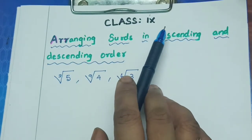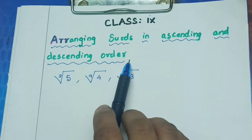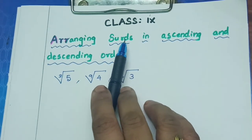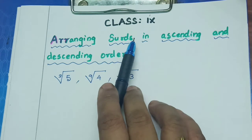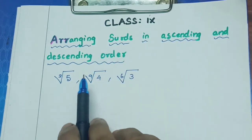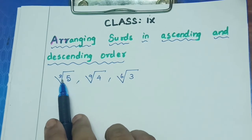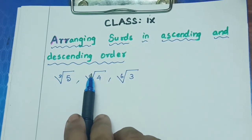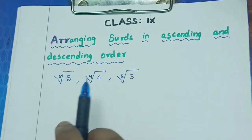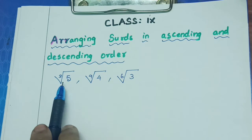Class 9 concept: how to arrange surds in ascending and descending order. Surds are a rational root of a positive rational number. The surds given are: cube root of 5, 9th root of 4, and 6th root of 3. The orders of these surds are all different.